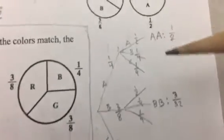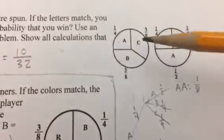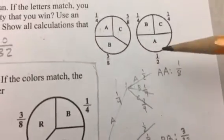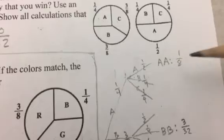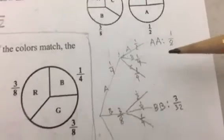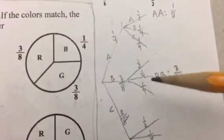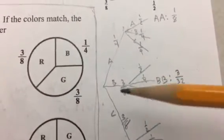I worked it out on a tree diagram here. Here's the A branch, one-fourth on the first spinner, and then A on the second spinner is one-half. So one-fourth times one-half is one-eighth. To get B-B, it'd be three-eighths times one-fourth, and you can see that here on this branch of the tree diagram.